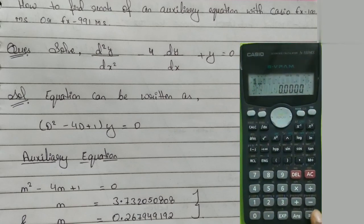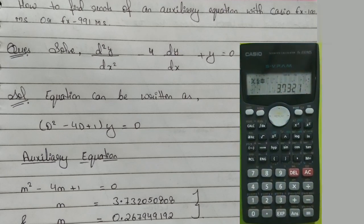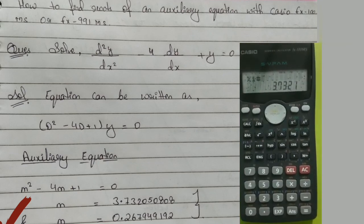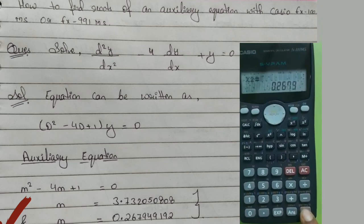After pressing equal, our value is m = 3.732050808. This is our first root. Again we press equal.